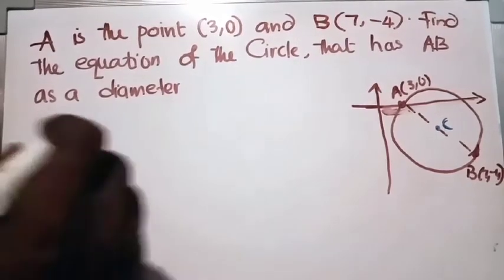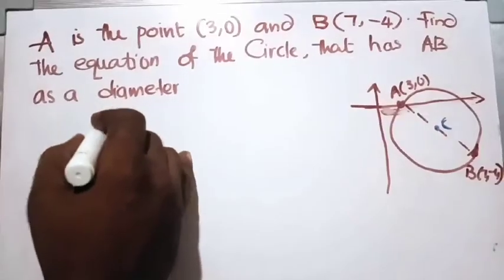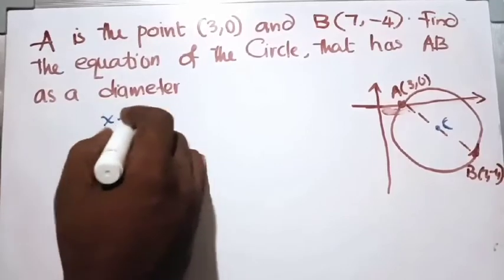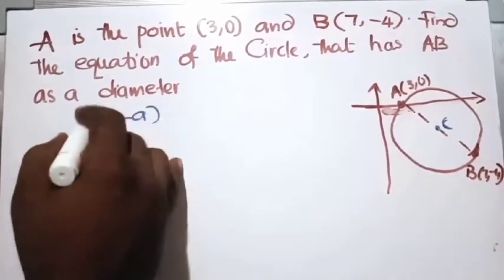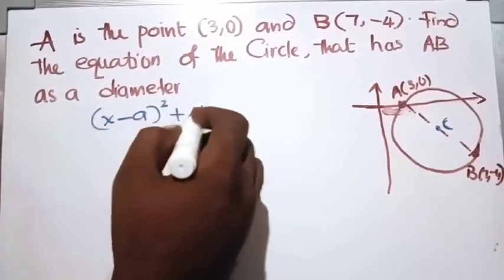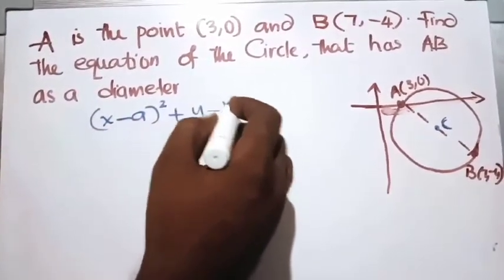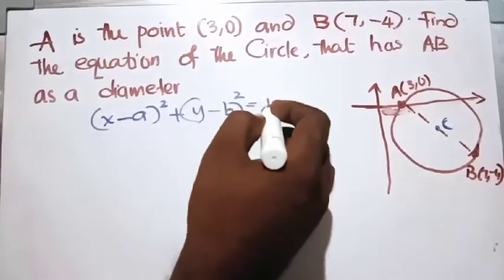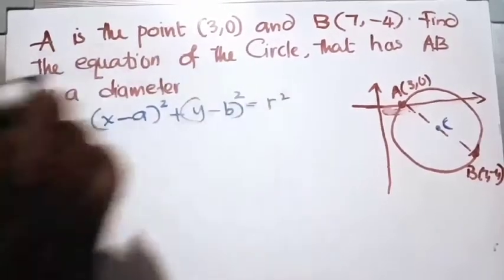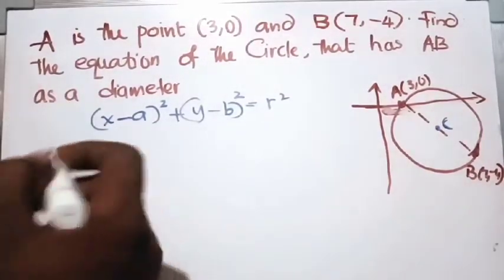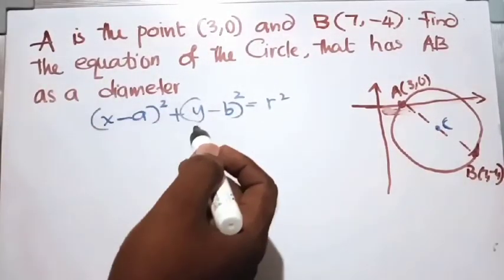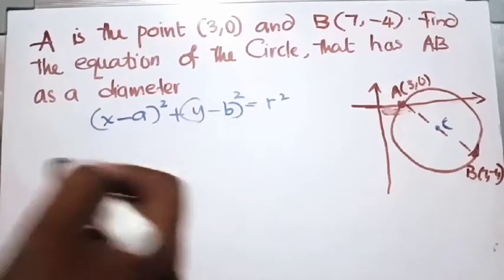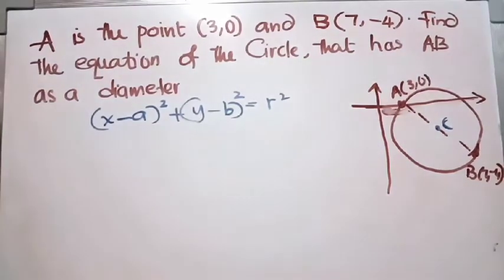As per our formula, (x minus a) squared plus (y minus b) squared equals r squared. To use this formula we need the center of the circle and also the radius.